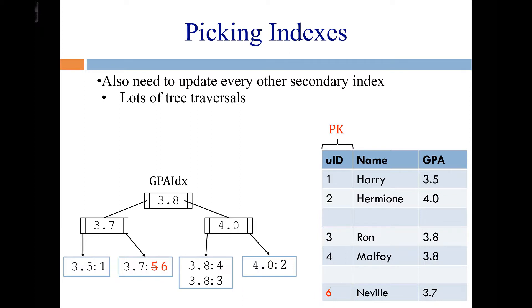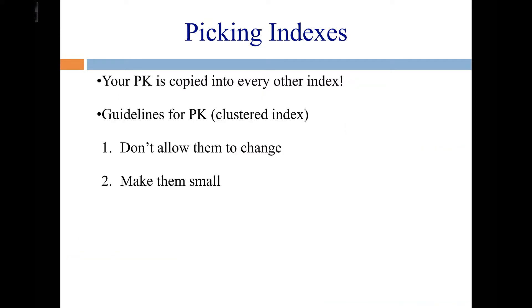So back to rephrasing this question, not how do we pick the primary index, but how do we pick the primary key? Well, remember that your primary key is copied into every other index. That's what it uses as a pointer. So guidelines for picking the primary key, well, it has to uniquely identify the row based on the relational model. And we should never allow them to change. And why should they change? If a primary key is just an identifier, why would you ever change somebody's identifier? And make them small.